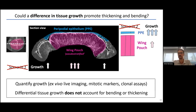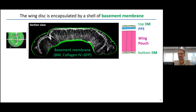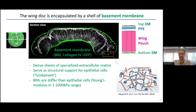This left me puzzled until I realized the wing disc is not only two epithelial layers but is also covered by a basement membrane — encapsulated in a shell of collagen, shown here in green. Basement membranes are sheet-like specialized extracellular matrices that provide structural support for epithelial tissues — think of them as the foundation of a building. Importantly, the stiffness of basement membranes is usually much higher than the Young's modulus of cells. So I hypothesized that the basement membrane has a dominant role in these morphological changes.